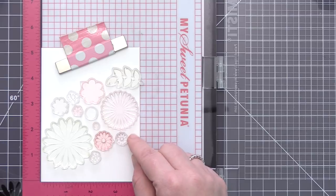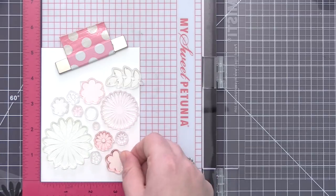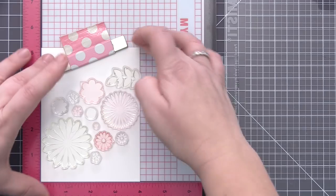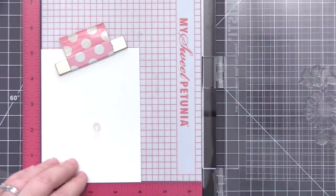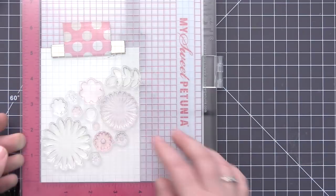So I'm just arranging all of the flowers onto my panel here, and this panel measures four inches by five and a quarter. I want it to go onto an A2 size card base but I want to have a little bit of a border around the white panel, so I just cut it slightly smaller.